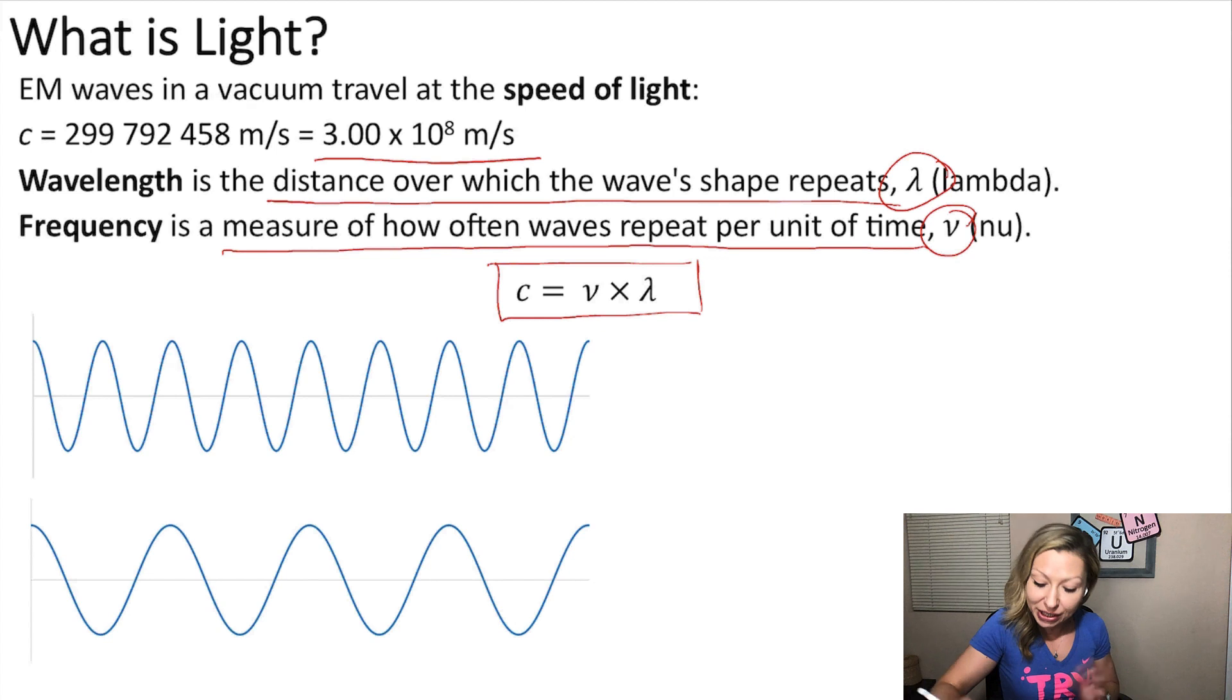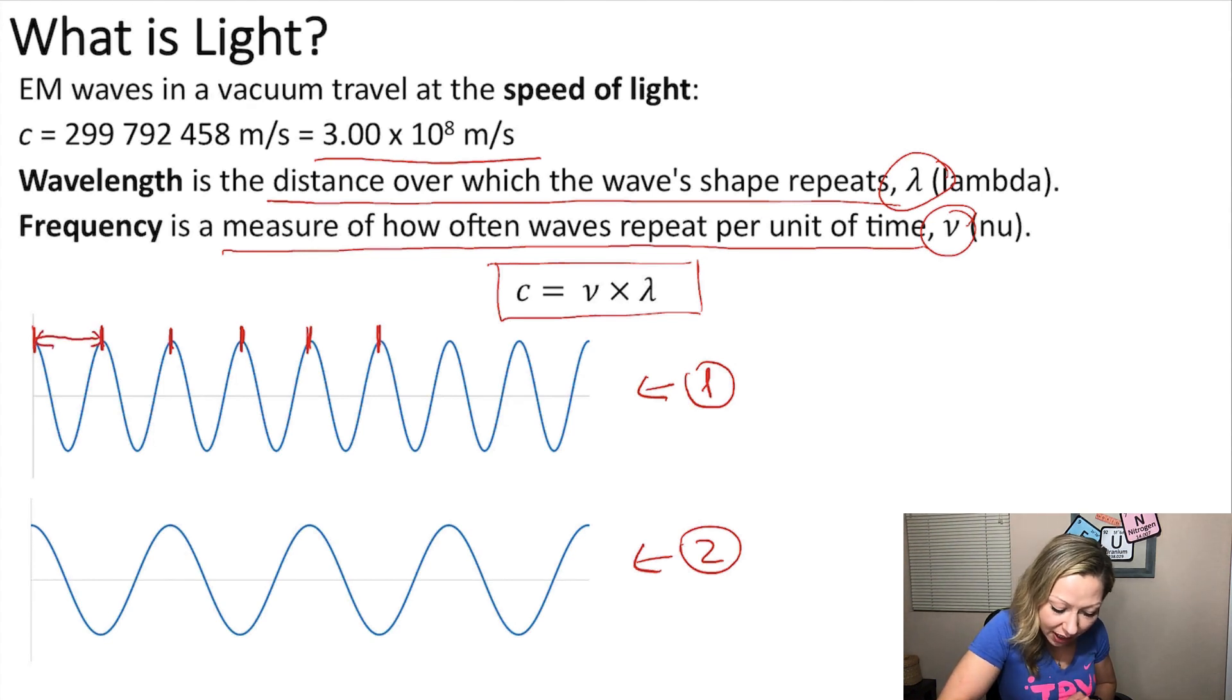So, let's take a look at these two waves right here. Let's call this wave number 1 and this wave number 2. Let's find the wavelength first. Let's find the shape at which the wave repeats. So, if we start right here, we can see that the wave shape repeats here, right? At these points.